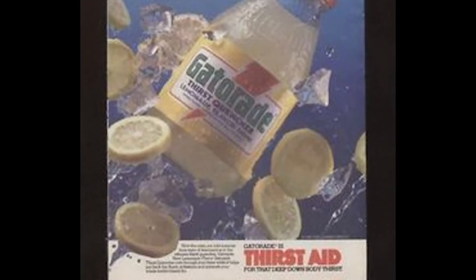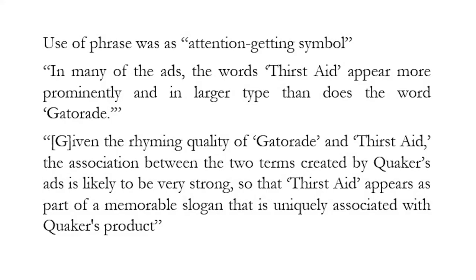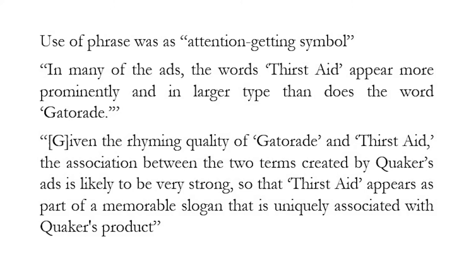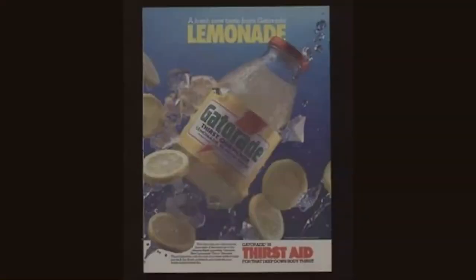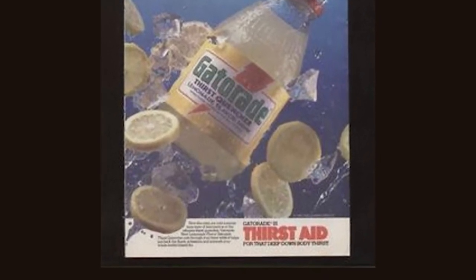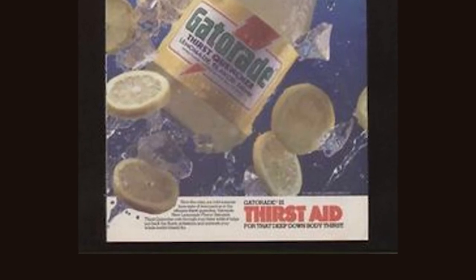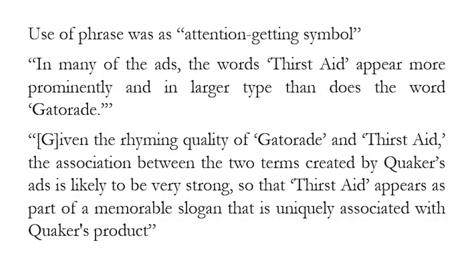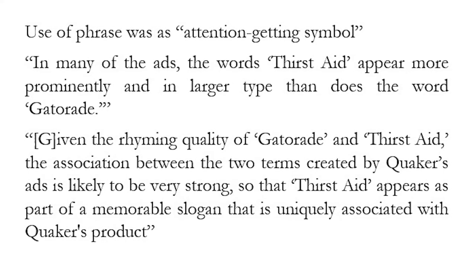You can see the argument that ThirstAid is a description of the Gatorade product — Gatorade will aid your thirst; it is ThirstAid for your deep down body thirst. But when you look at the ad, ThirstAid is displayed very prominently, almost in a way one might expect a trademark to be deployed. The Seventh Circuit said there was no fair use — that this use was as an attention-getting symbol. In many ads, the words ThirstAid appear more prominently and in larger type than does the word Gatorade. Given the rhyming quality of Gatorade and ThirstAid, the association is likely very strong, so ThirstAid appears as part of a memorable slogan uniquely associated with Quaker's product.